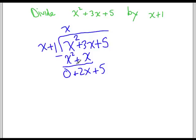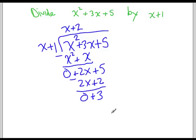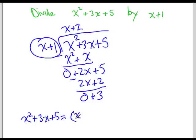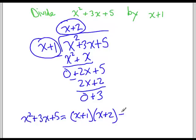We've got to multiply x by 2 to make it 2x, and we're going to write plus 2, giving us 2x plus 2. So 2x minus 2x is 0, and 5 minus 2 is 3. It turns out that x squared plus 3x plus 5 equals this times this with a remainder of 3.